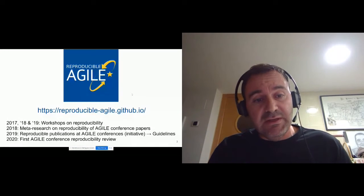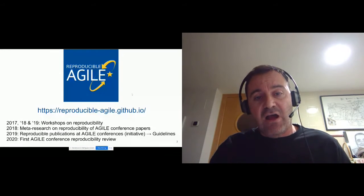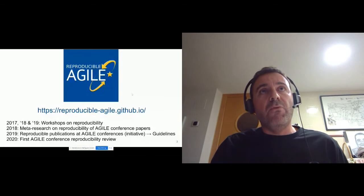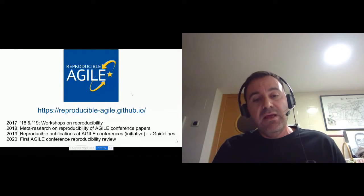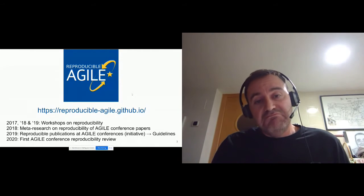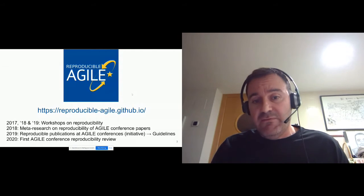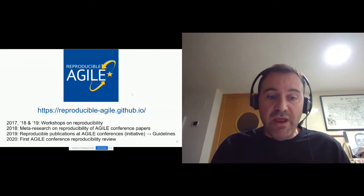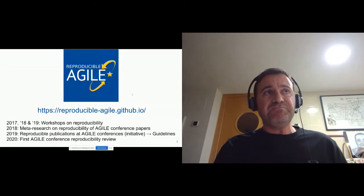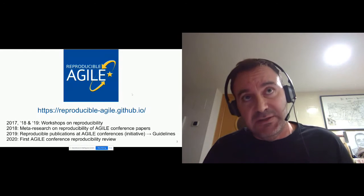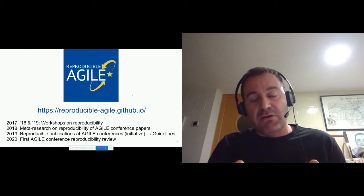We also do some kind of meta-research paper in order to evaluate the reproducibility level of the different AGILE conference papers submitted in previous years. Most importantly, last year we created author guidelines to provide some instruction for authors to submit reproducible papers to the conference. This year, even though the conference was cancelled due to COVID, we managed to evaluate the full paper submissions based on this reproducibility criteria.